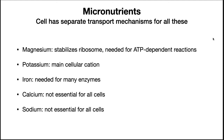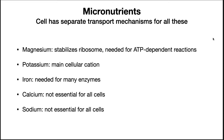Potassium is the primary cellular cation. Iron is needed for many enzymes, often as a carrier of electrons. Calcium and sodium are also sometimes required for cells either in a structural or enzymatic role. The cell will have transport mechanisms to move all of these compounds inside. Elements needed in even smaller quantities, often much less than 0.1%, are trace elements.